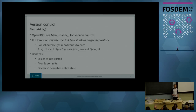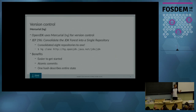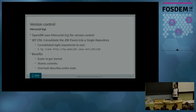JEP-296 consolidated everything from eight into one repository. If you want to work on the latest mainline, you can now do a single HG clone command and get the JDK source code. The values here are multiple: it's easy to get started, it's easier to wrap your head around the repository layout, and you get atomic commits. If I make a change in Hotspot and a change in the JDK, I can now commit it as one atomic commit — previously they'd be in different repositories. We also have one hash for one given commit describing the entire state of the project at any given time.